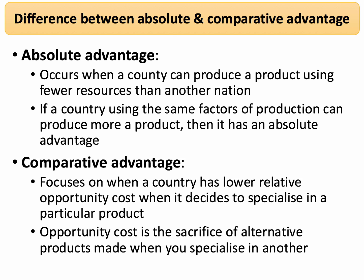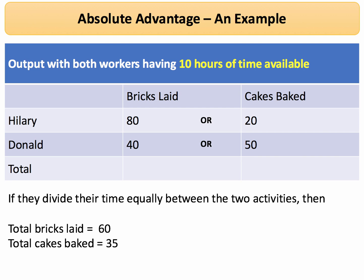In this video we're going to focus on absolute advantage using a simple numerical example. Let's take two workers — we'll call them Hillary and Donald — and they both have 10 hours of time available per day. With 10 hours, Hillary could lay 80 bricks or bake 20 cakes. Donald could lay 40 bricks or bake 50 cakes.